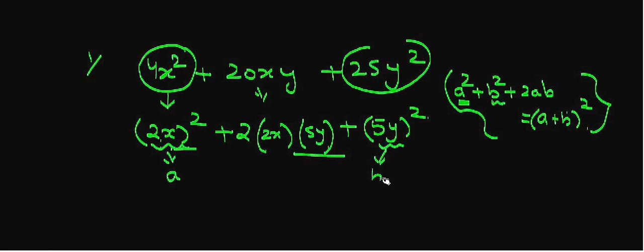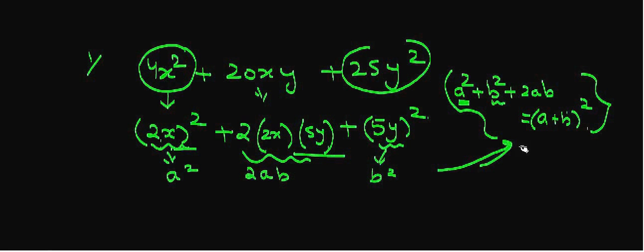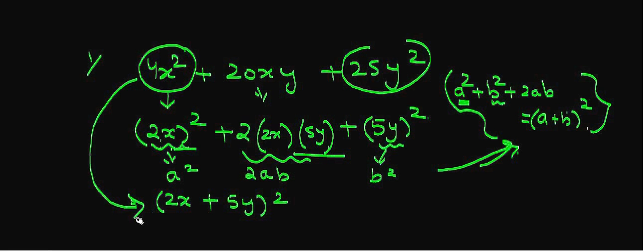This can be considered as b, and this middle term is actually 2ab. So we can apply the identity a² + 2ab + b² = (a + b)². In this expression, in place of a we write 2x and in place of b we have 5y. So this expression in factor form can be written as (2x + 5y)².